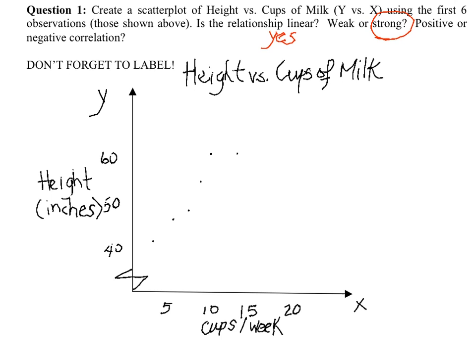Finally, is the relationship a positive or negative correlation? We answer this by examining: as the observations for x go up, what happens to y? As x goes up, the observations for y also go from smaller to larger numbers — we call that a positive relationship. So yes, there is a positive, strong, linear relationship.